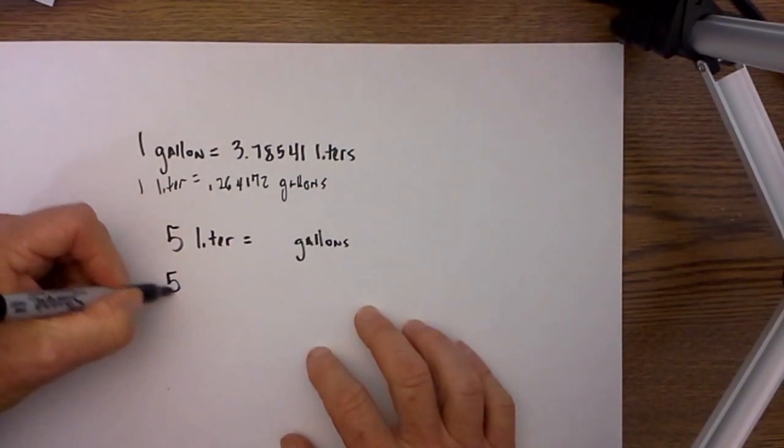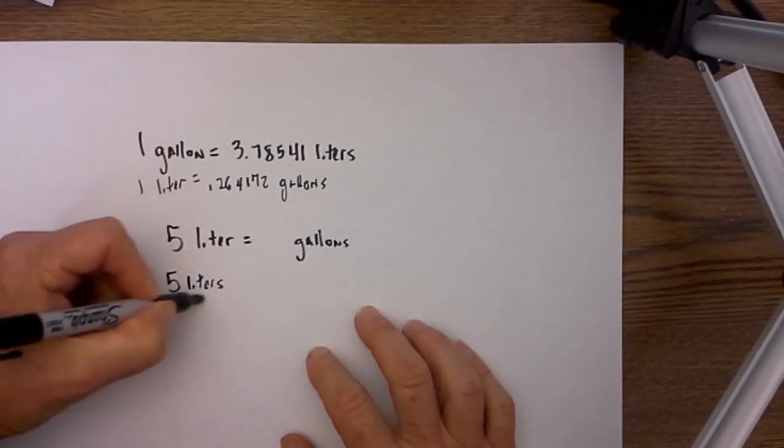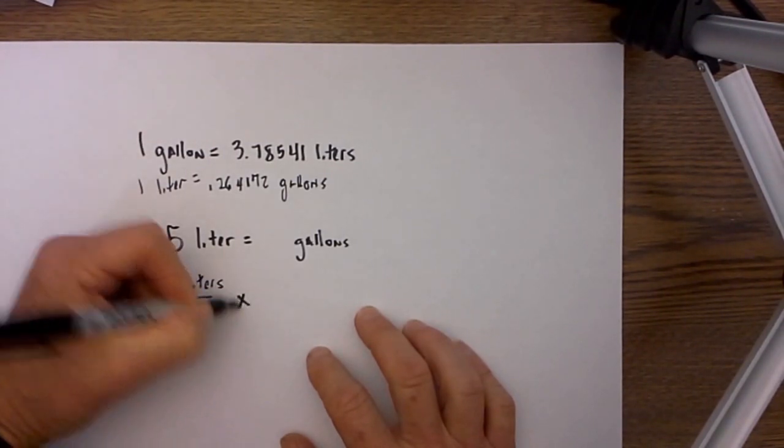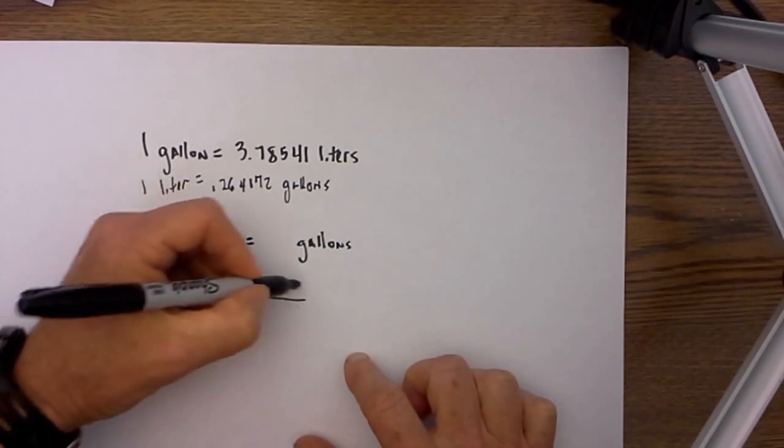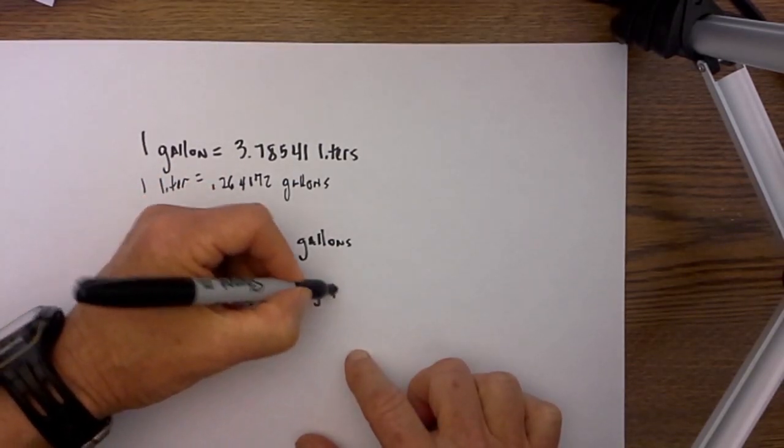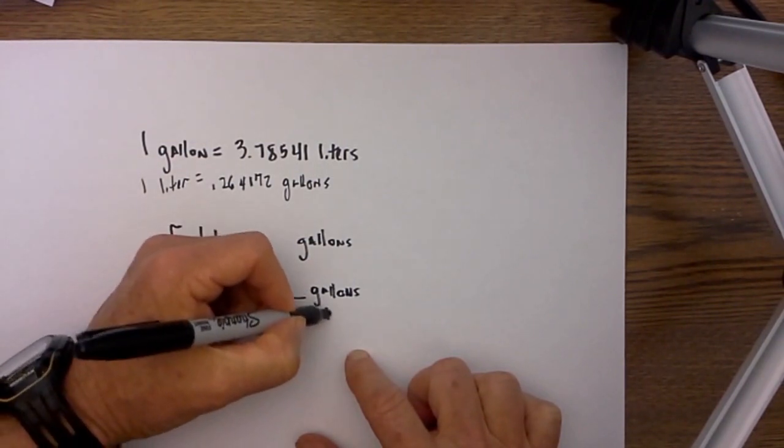Step 1, what I do is I will put liters on top. I will create a fraction and then do a multiplication. I always put the unit I want to convert to on top, and that is gallons, and therefore I will put liters on the bottom.